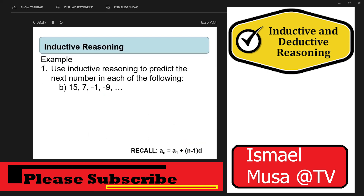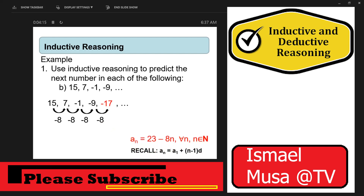Now the second sequence: 15, 7, negative 1, negative 9. You will notice that 15 minus 8 gives 7; 7 minus 8 gives negative 1; negative 1 minus 8 gives negative 9; and negative 9 minus 8 gives negative 17. Our conjecture is 23 minus 8n, for all n that are natural numbers.